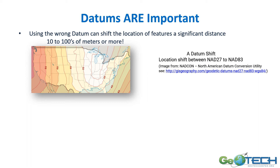Datums are important because they will shift things. If you've ever looked at maps online and seen parcels and streets that don't line up, it's often because the underlying map is in one datum and the data on top is in another — and it can shift things by tens to hundreds of feet. The further away you are from the central United States, the more the shift can vary.